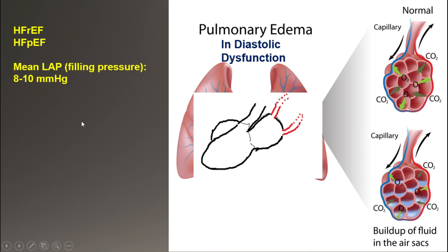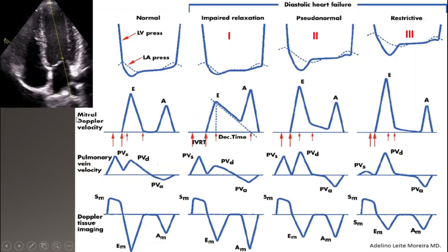The normal mean left atrial pressure, or filling pressure, is about 8 to 10 mmHg. In diastolic dysfunction it goes higher. Changes in diastolic dysfunction follow a specific pattern on Doppler. As shown in this chart, the left column is normal and the other three represent different degrees of diastolic dysfunction. In the early stage, the relaxation of the left ventricle decreases, relaxing with delay — seen as increasing IVRT, or isovolumetric relaxation time.